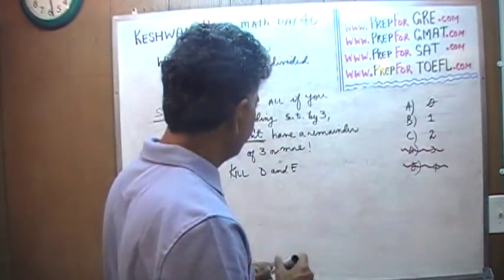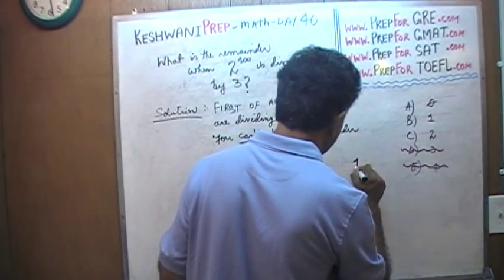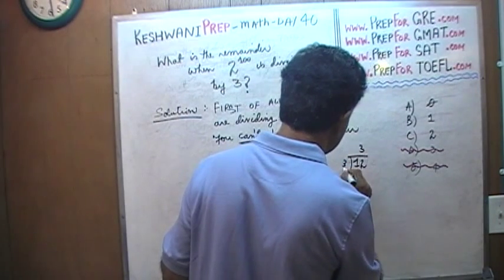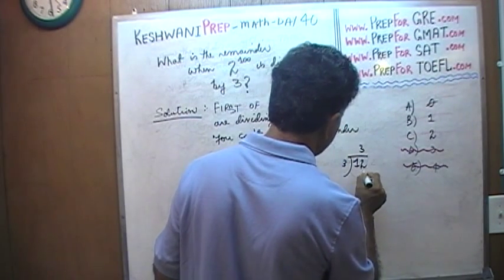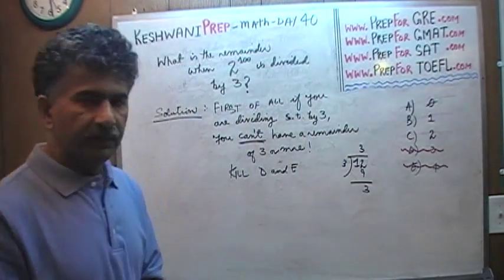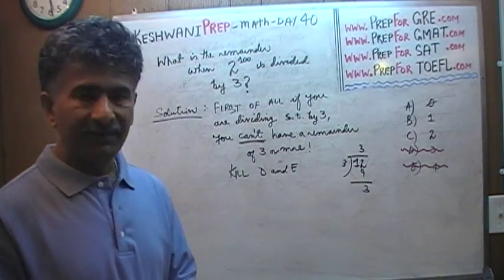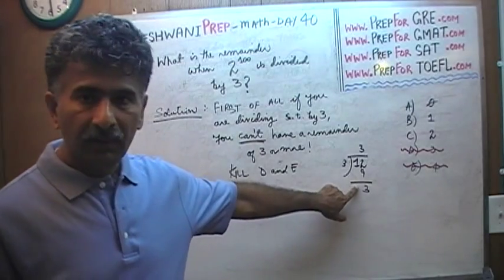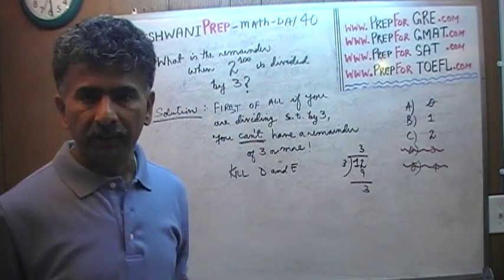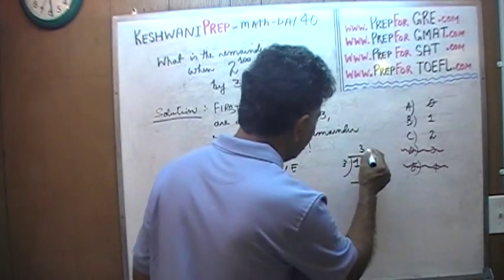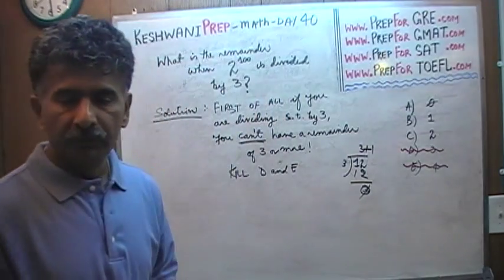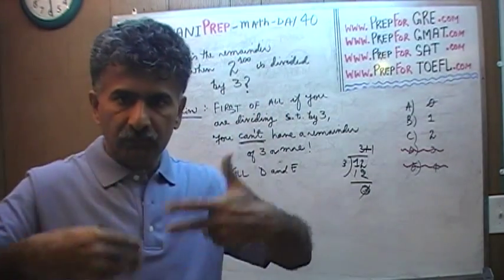For example, if you ask me to divide 12 by 3, and I tell you the remainder is 3 — that's silly, that's irrelevant. If I have a remainder of 3 and I was dividing by 3, why didn't I go one more time? Instead of 3, I should have put 4, and 12 divided by 3 would be exactly 4 with no remainder. Because if I have 3 left, I have enough to go one more time.